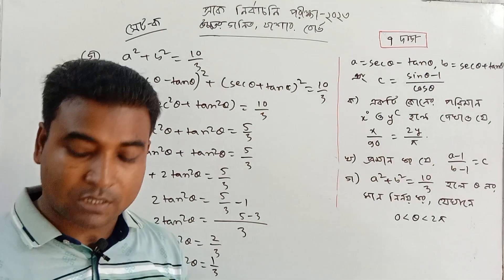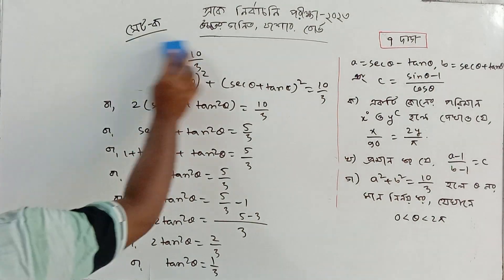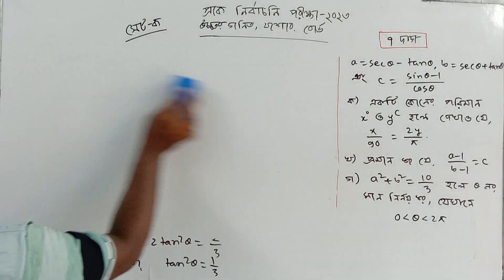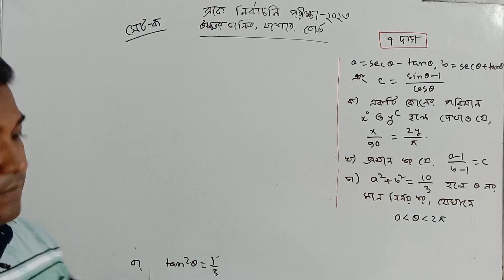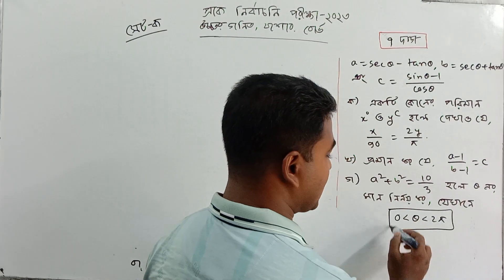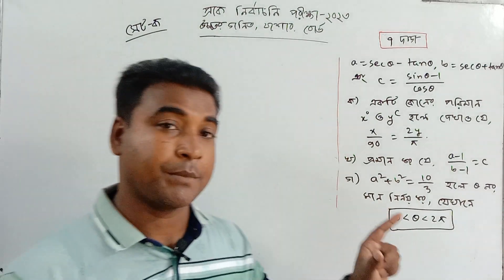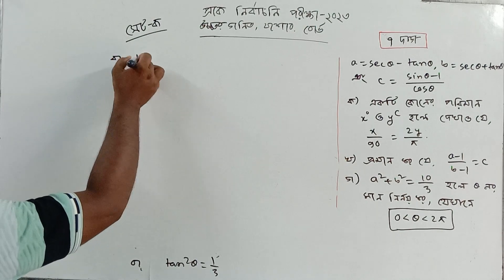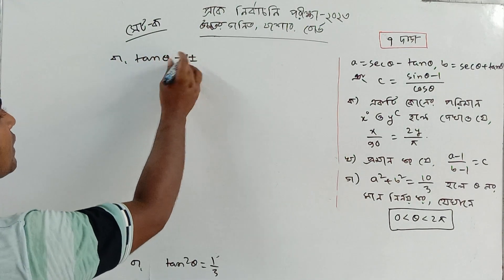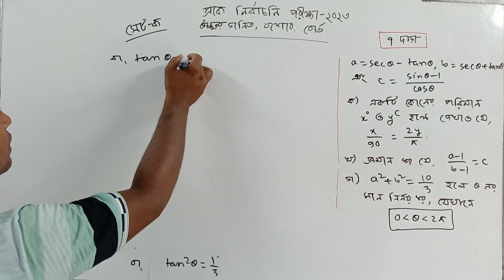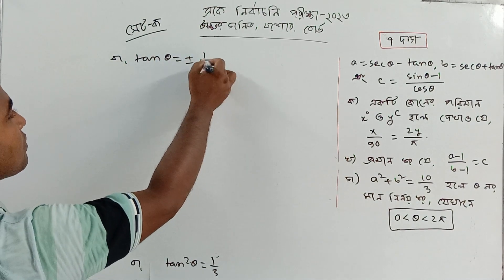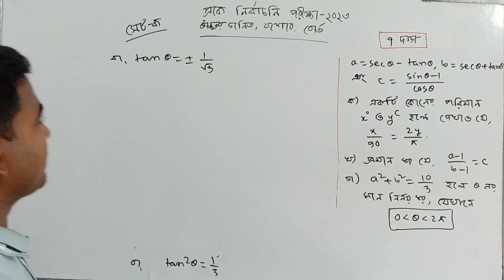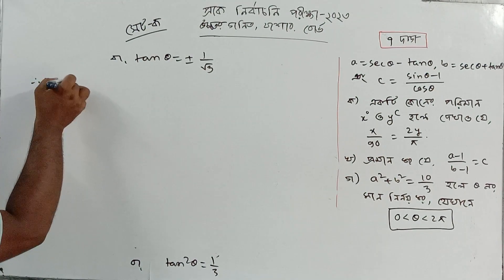So why is 2 equal to 2 by 3? The main topic of this question is the quadrants. Which quadrants? The range is 0 to 2 pi, so the quadrants will include first, second, third, and fourth. Tan equals plus or minus 1 by root 3.